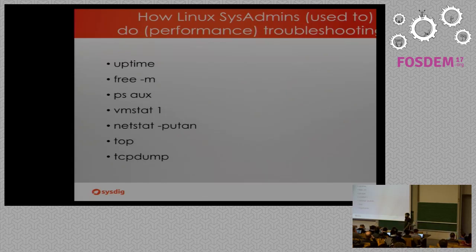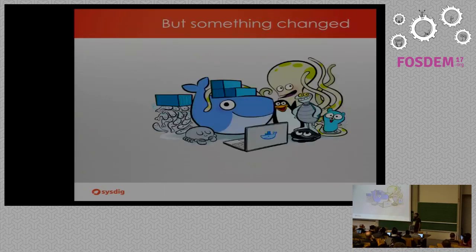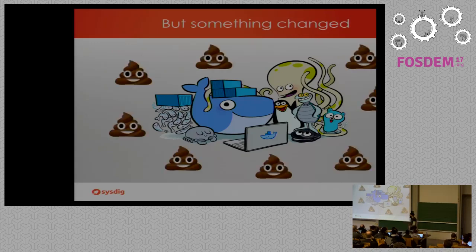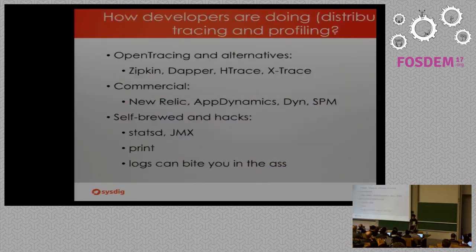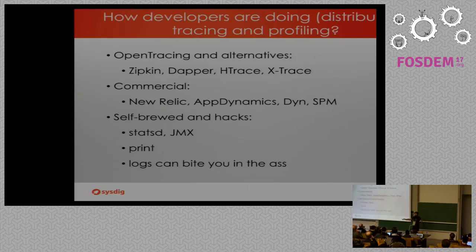We came up with this thing because traditionally sysadmins have been doing troubleshooting, not tracing — sysadmins didn't use to do tracing with these kinds of tools. But then something changed. These tools became less useful with Docker, containers, and all that. And then we got microservices deployed everywhere, and it was time for a change. Developers started to use different tools and they started to use tracing heavily, because when you have distributed services you need to know how they talk to each other, where the problems are, and troubleshoot in-between.